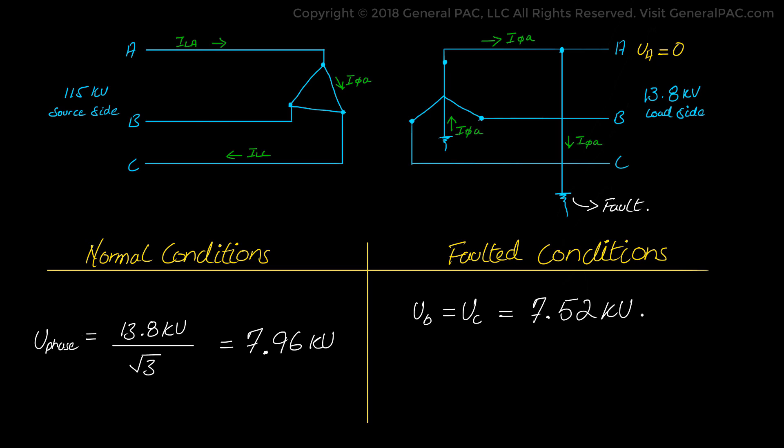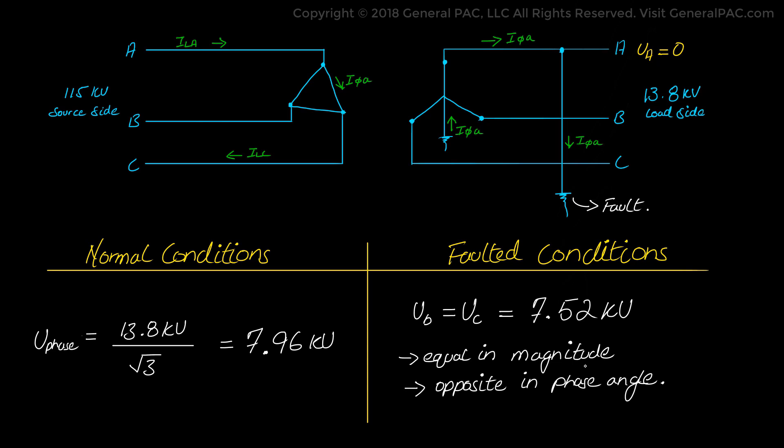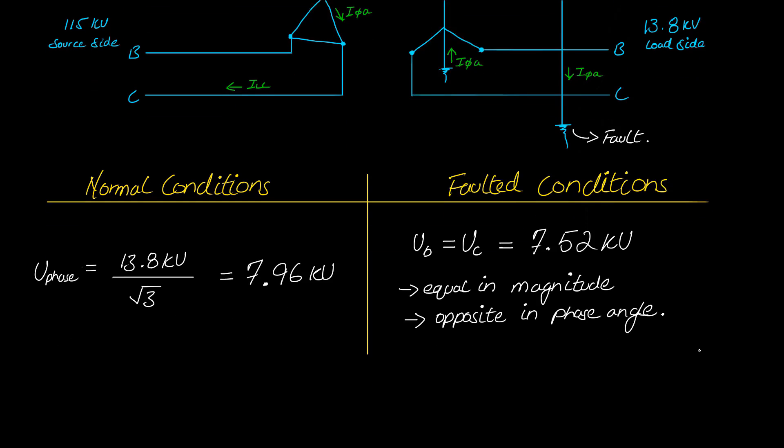Another interesting observation is that the angles of phase B and C voltages are equal in magnitude but opposite in sign — negative 113° and positive 113°. This makes sense because phase A voltage is driven to zero, and at the point of the fault the remaining two phases must balance out, so their phase voltages are equal in magnitude but opposite in angle.